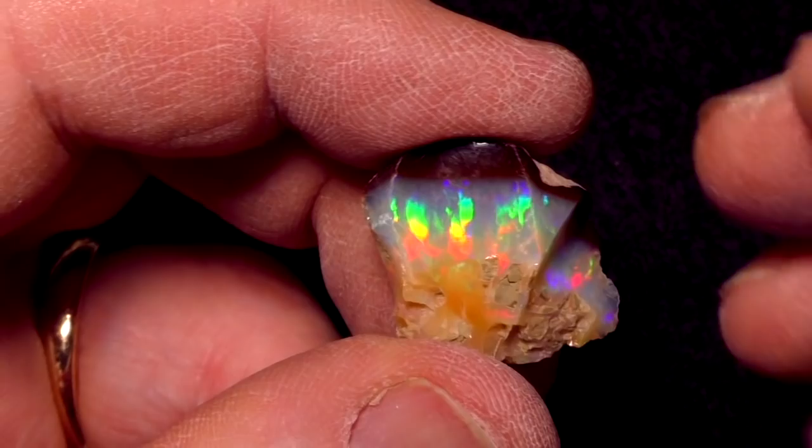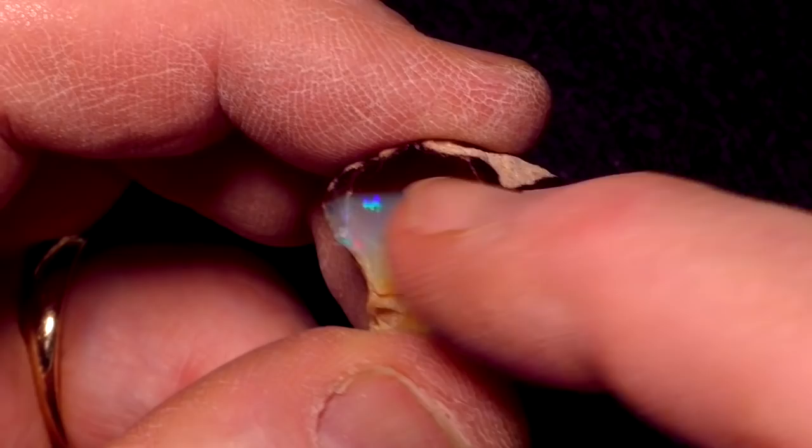This is Ethiopian Opal with an unusual brown potch layer. Let's get started. We've got a lot to cover today.